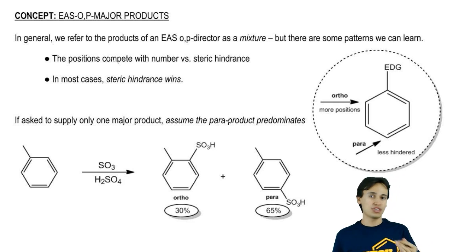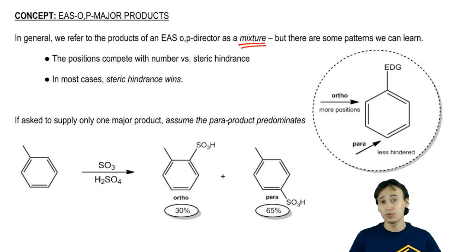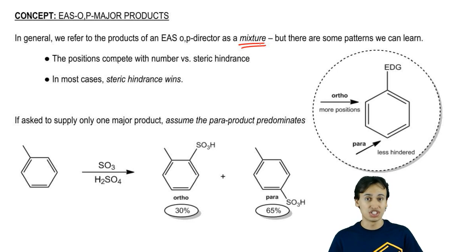In general, whenever we have an EAS reaction on an ortho-para director, we're just going to say that the product is a mixture of both the ortho and the para position. If you want to play it safe, you can always just say that it's a mixture. That's the way that most textbooks teach it.